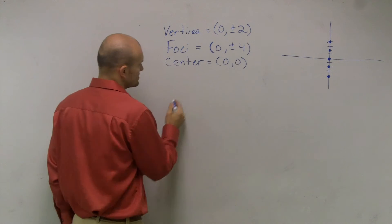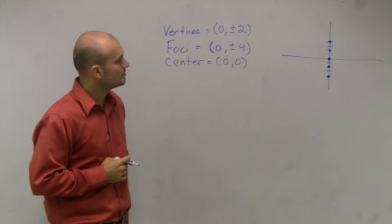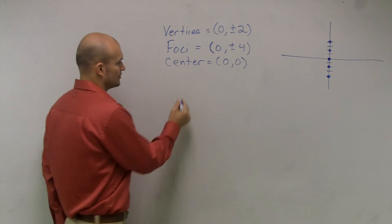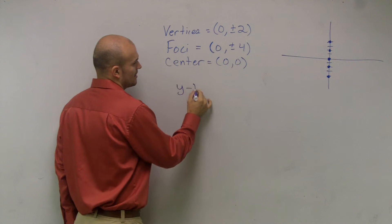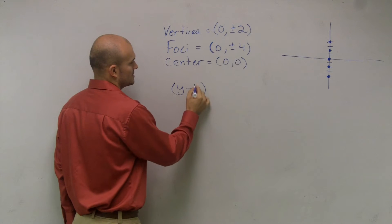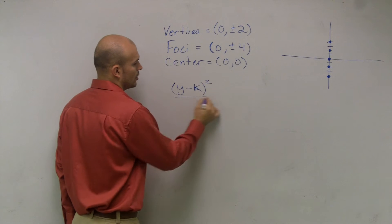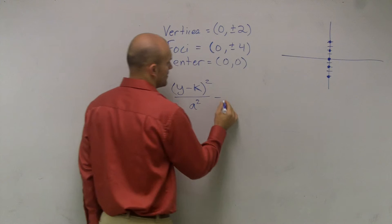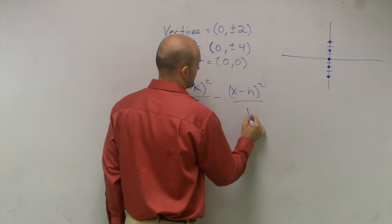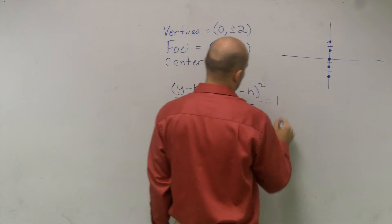So therefore I need to write the correct formula. When it's a vertical, that formula is going to be (y - k)² / a² - (x - h)² / b² = 1.